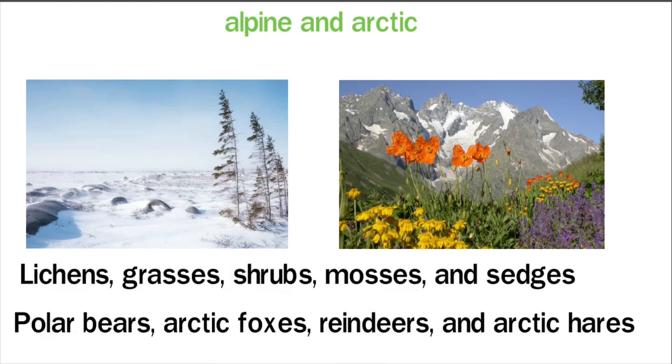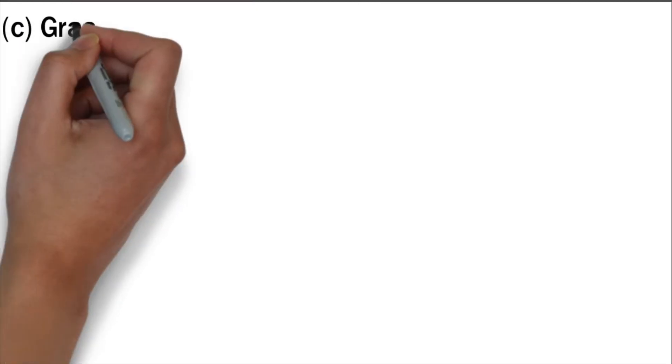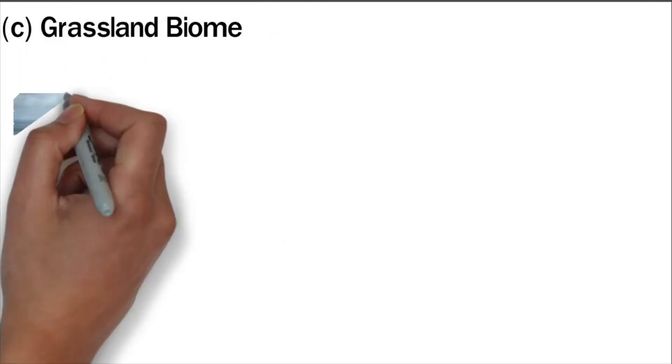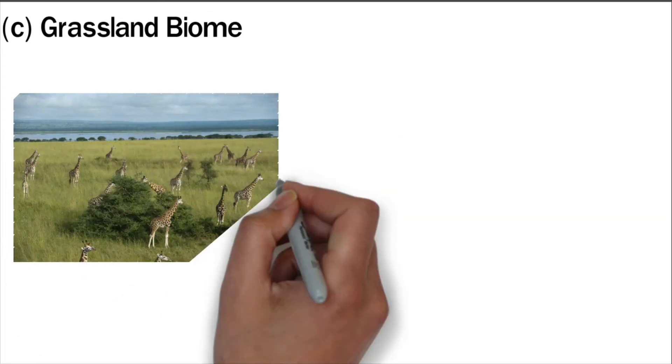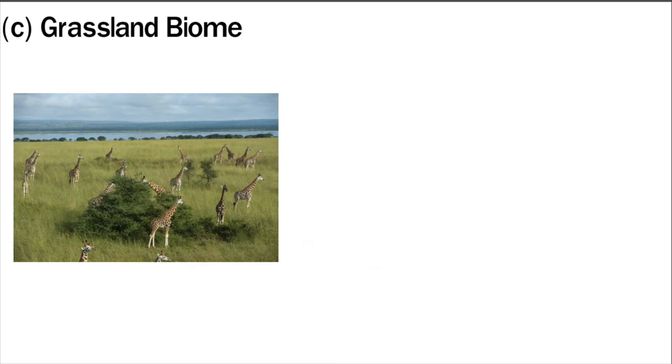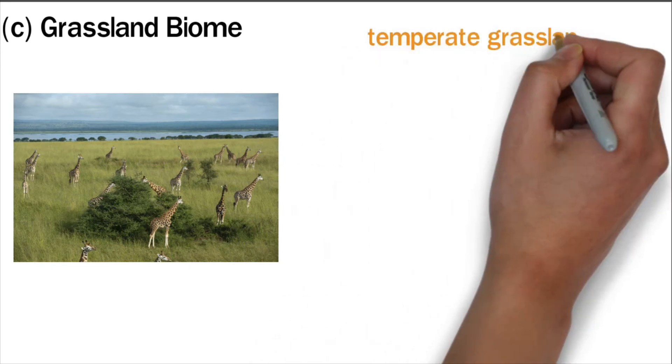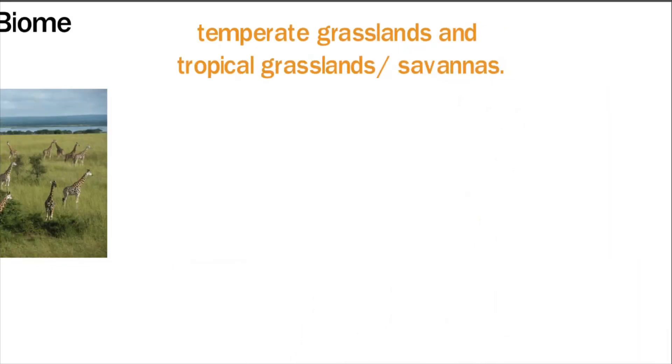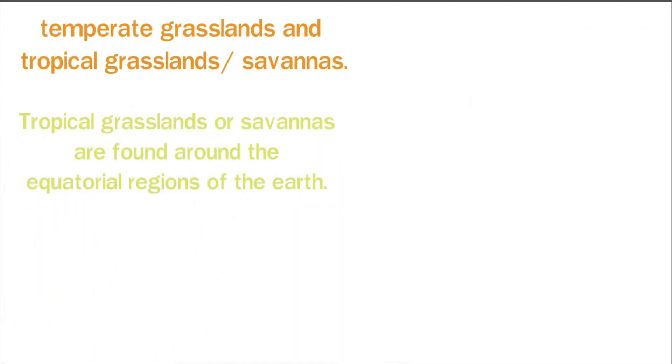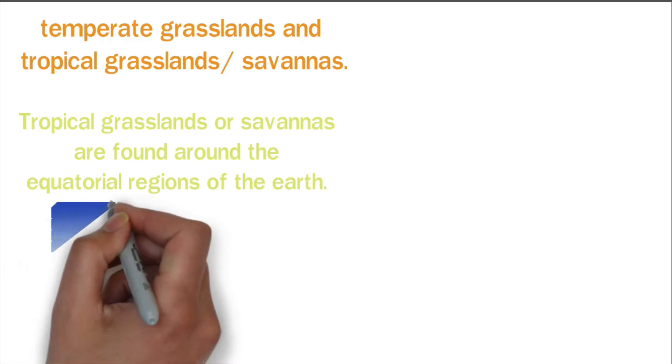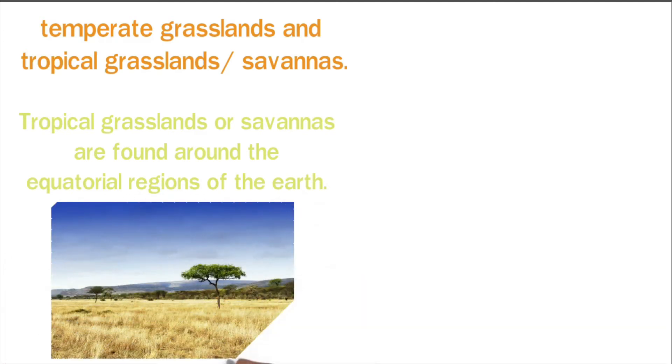Grassland biome: Grasslands often have warm and dry climates. These areas are mostly dominated by grass. There are two types of grassland biomes: temperate grasslands and tropical grasslands or savannas. Tropical grasslands or savannas are found in the equatorial regions of the earth. They receive a substantial amount of rain at specific times of the year followed by severe drought. Savannas have few trees due to insufficient rainfall.